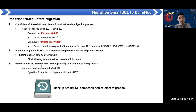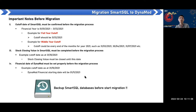The financial date of Dynamo must be set properly before the migration process. For example, if the cutoff date is 31st October 2021, the Dynamo financial starting date must be set to 1st November 2021. Before migration, if possible, do a backup of Smart SQL first.